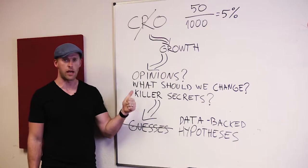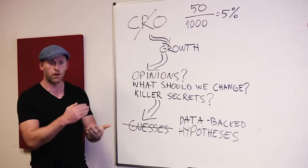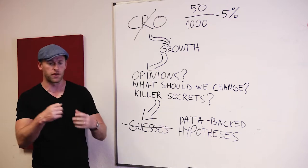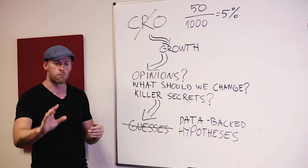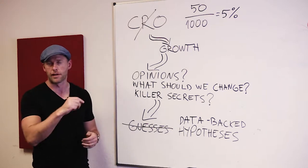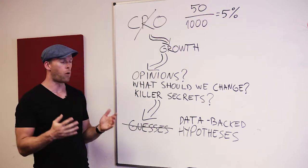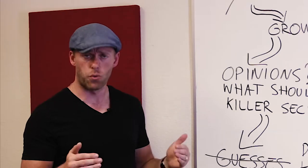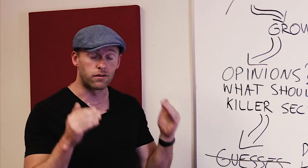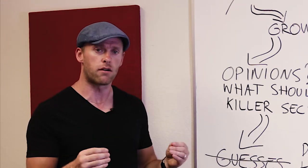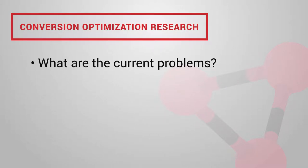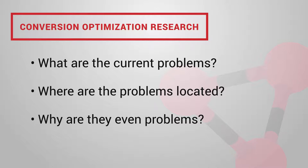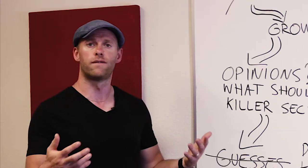The main question is: what should we change? In optimization, we want to change, add, remove, or modify something on our website to make more money — more people buying, becoming a lead, whatever we're trying to accomplish. If we agree opinions are the wrong way, the right way is conducting research. We need to figure out what the current problems are, where they are, and why they exist. Only then can we come up with a better idea about how to fix them.